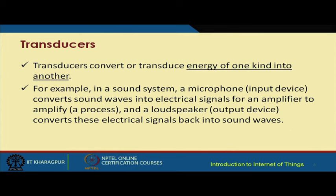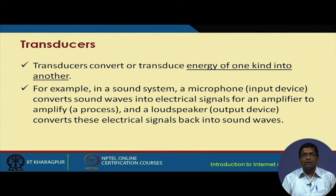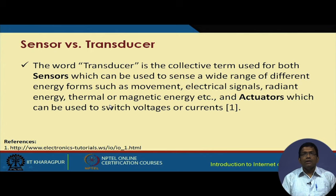There is an associated terminology — transducers. Transducers basically convert one form of energy into another. For example, in a microphone, sound waves are converted to electrical signals, and then through an output device like a loudspeaker we are able to hear that sound. So this is an example of a transducer. The terms sensors and transducers have a lot of overlap, and we need to understand the distinction between these two.